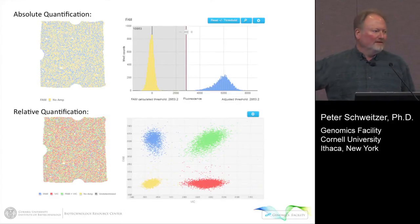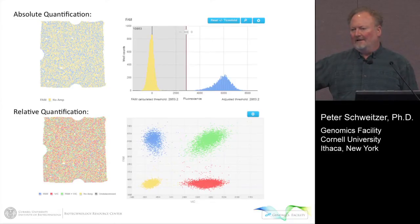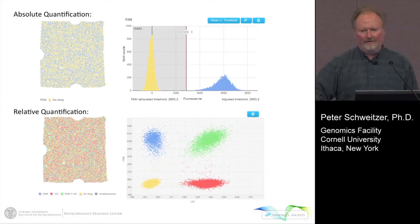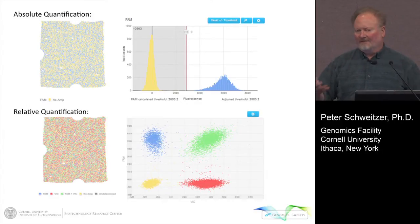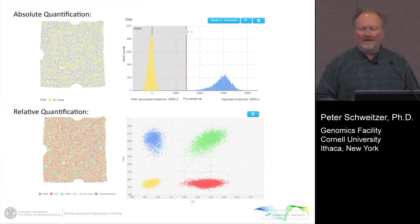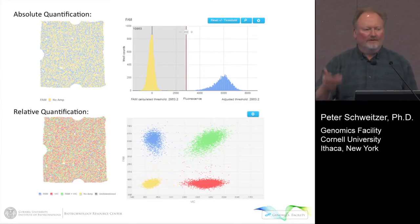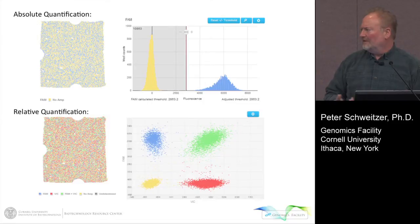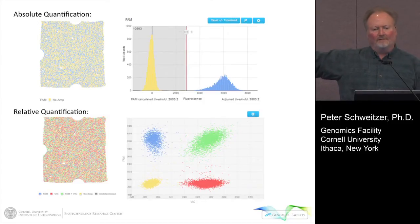But you can also do relative quantitation, and I'll argue that you should always try to do this. It's a fabulous way to do it because then you don't really have to worry about the DNA concentration going in, as long as you're within the range of the instrument. These are the type of images that the software produces.